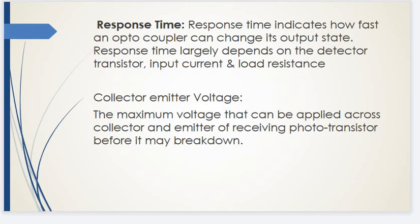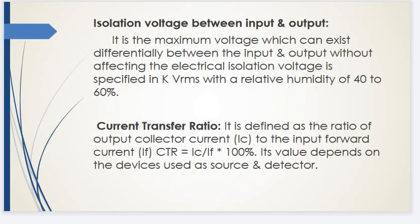Collector-Emitter Voltage is the maximum voltage that can be applied across the collector and emitter of the receiving phototransistor before it breaks down. Isolation voltage between input and output is the maximum voltage which can exist between input and output without affecting electrical isolation, specified in kilovolts at a relative humidity of 40 to 60%. Current Transfer Ratio is defined as the ratio of output current to input forward current: CTR = (IC / IF) × 100, and its value depends on the devices used as source and detector.